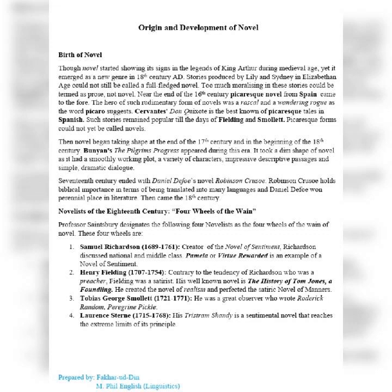We now move to the 18th century. There were four main novelists, and these four main novelists can be called the 'four wheels of the van' — van meaning any four-wheeled vehicle. Professor Saintsbury designates the following four novelists as the four wheels of the van of the novel. Number one: Samuel Richardson, 1689 to 1761, creator of the novel of sentiment. He wrote the novel of sentiment and can be called the creator of that form.